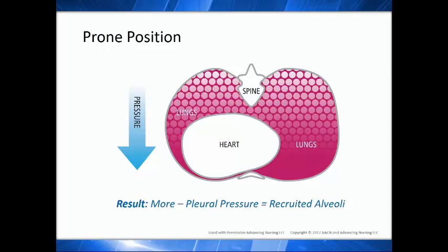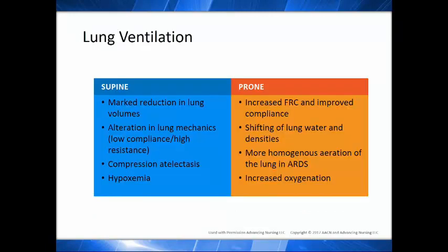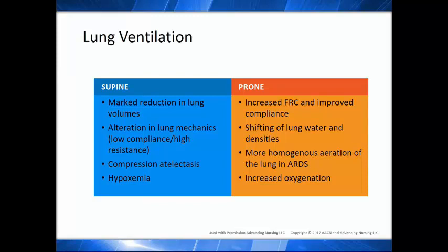How many of you have proned individuals? How many have seen PaO2 changes from the 50s to the 200s or higher in a single session? You have to be recruiting lung for that to take place. In the supine position, there's a marked reduction in lung volume because of diaphragmatic impact, abdominal factors, and pleural pressure changes. This leads to altered lung mechanics, compression atelectasis in ARDS, and hypoxemia. The goal of flipping somebody prone is to improve FRC, recruit alveoli, reduce stress injury from opening and closing of alveoli, create more homogeneous aeration, and increase oxygenation.